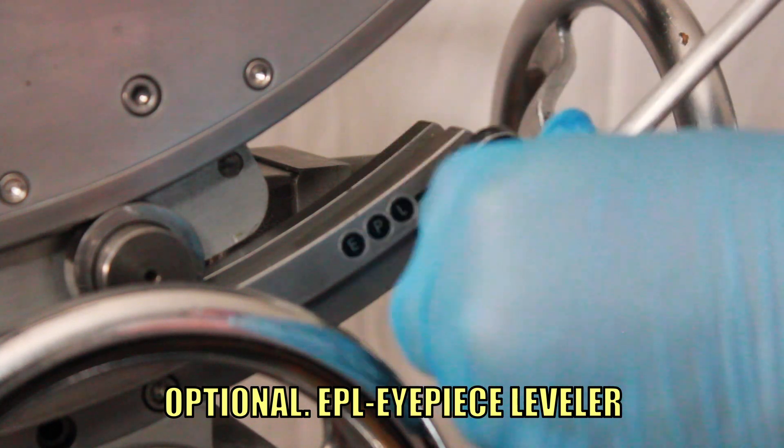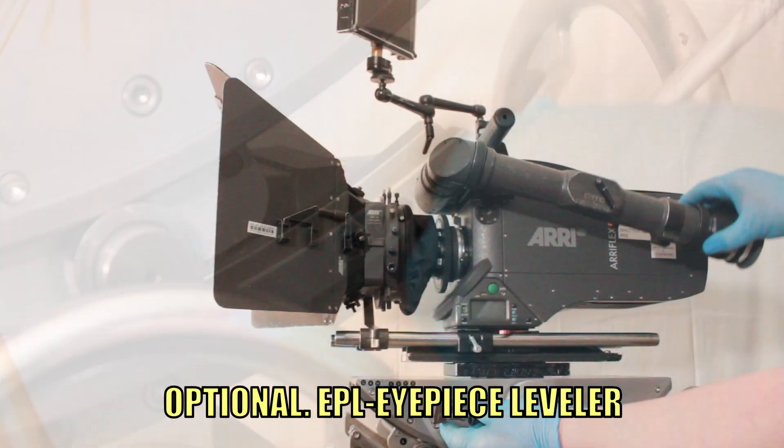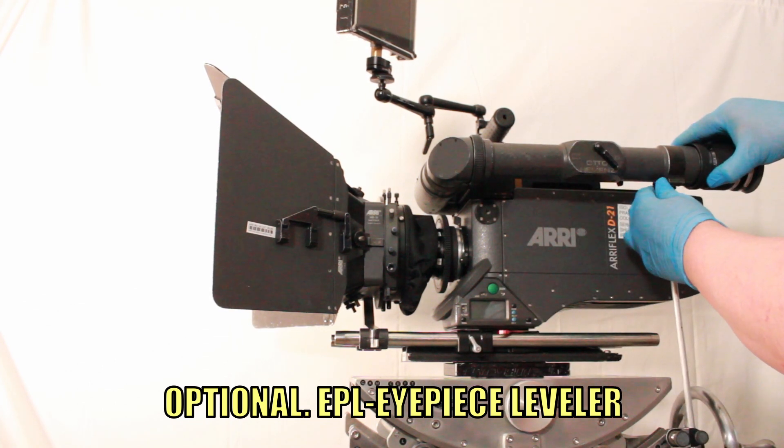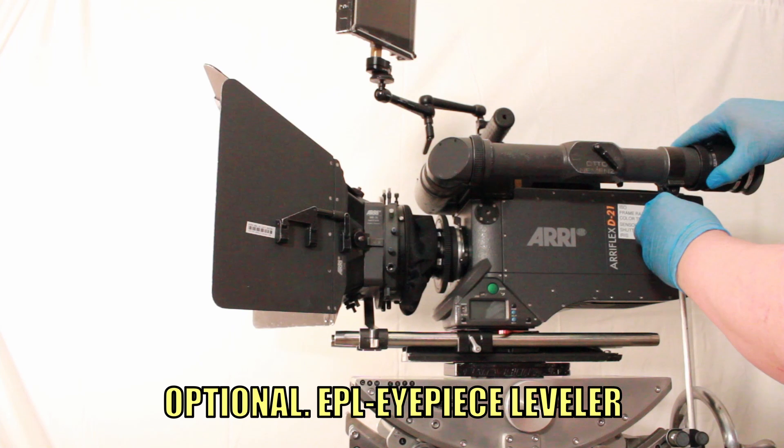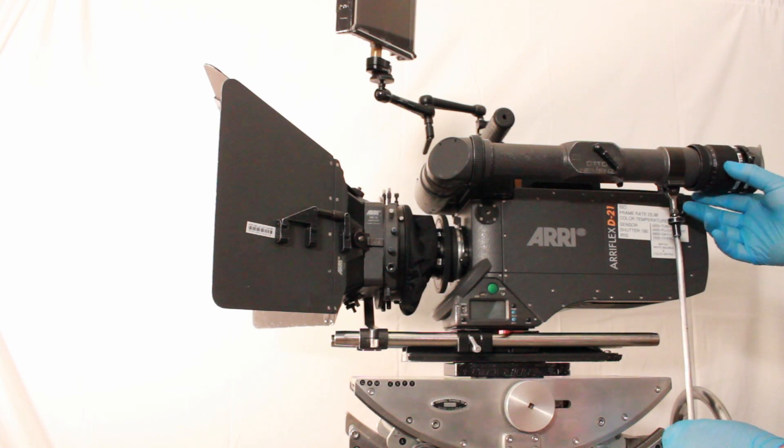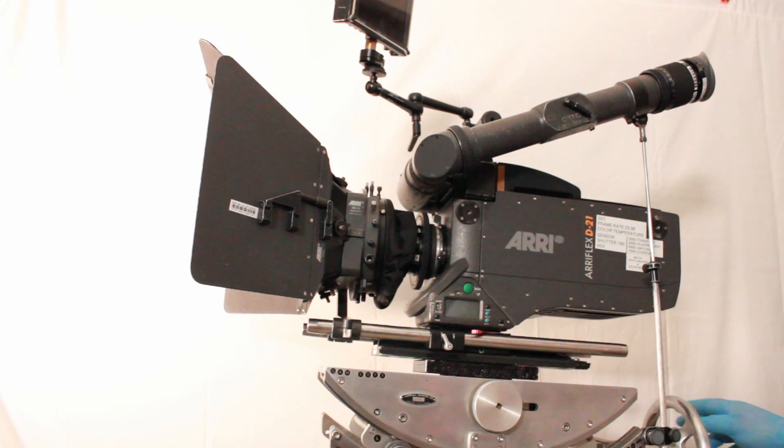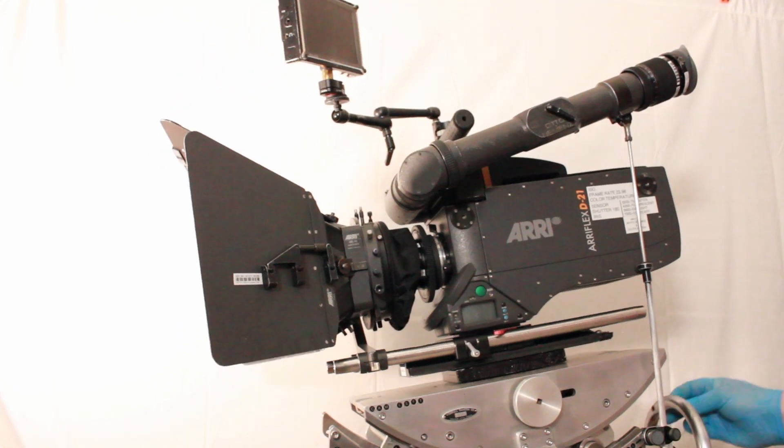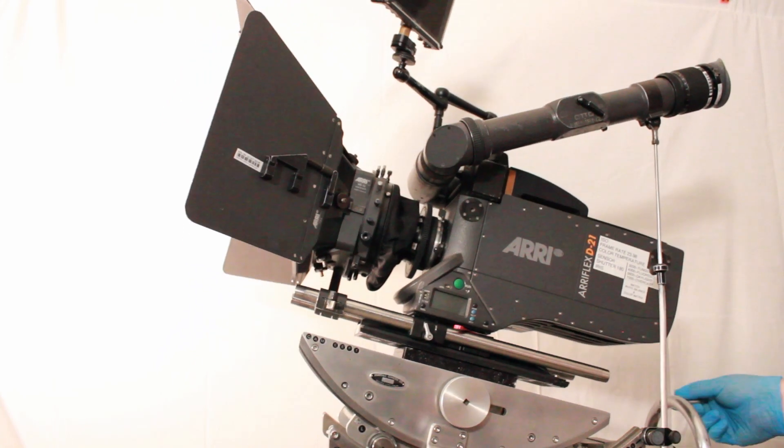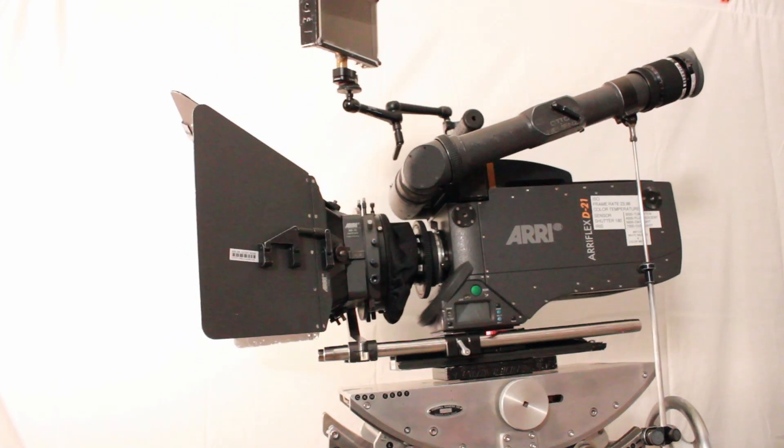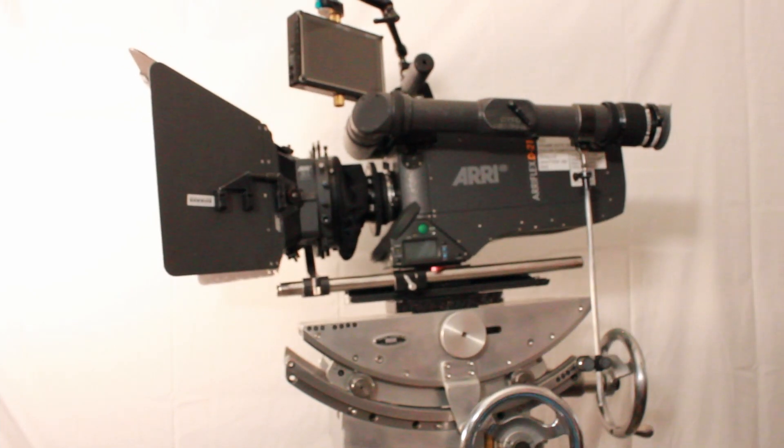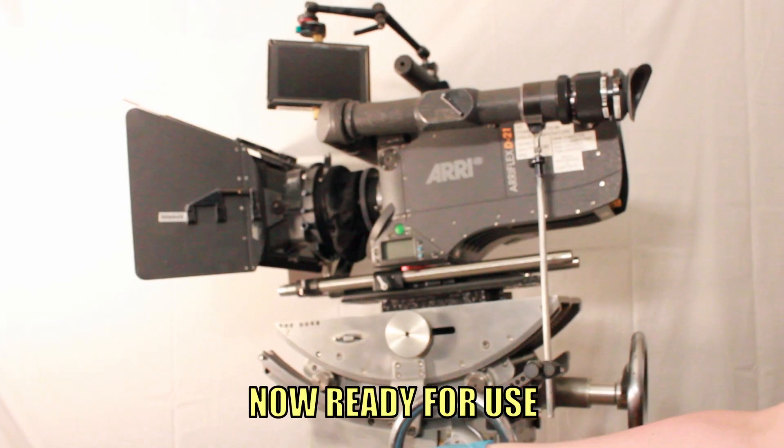Attach optional eyepiece leveler if needed. Adjust EPL to desired height. The geared head is now ready for use.